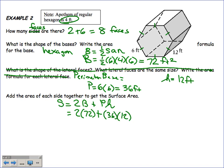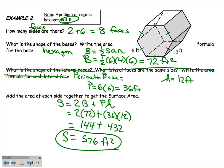We needed a calculator for some of that — 36 times 12 is 432, giving a total of 576. Since we're dealing with surface area, our units are square feet. Any type of area always has squared units.